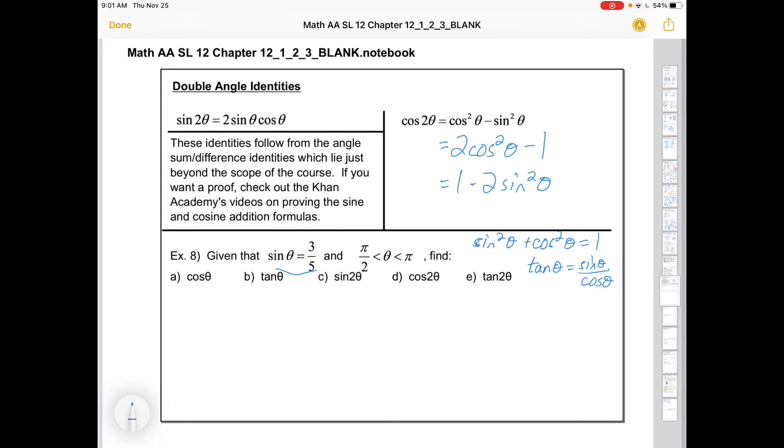In this first one we know that sin θ is 3/5, that the angle is between π/2 and π, so it's in the second quadrant. And in part A we're asked to find cos θ. So this is going to be the identity that we need. Not a double angle identity, because this didn't have a double angle. It's an identity that has sine, which we know, and cosine, which we want.